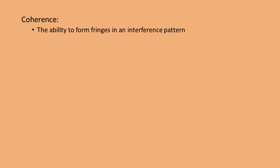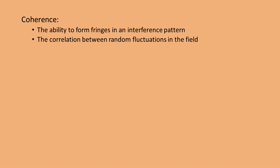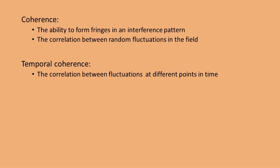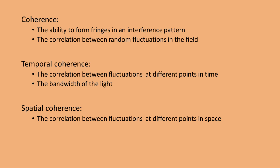To summarize this first part: coherence can be interpreted as the ability of a field to create interference fringes, which depends on how correlated the random fluctuations of a field are. We made the distinction between temporal and spatial coherence. Temporal coherence describes the correlation between fluctuations of a field at a certain position at different points in time, and it can be thought of intuitively as the bandwidth of the light. Spatial coherence describes the fluctuations of a field at different points in space, and can be thought of as being closely related to the size of an extended source.